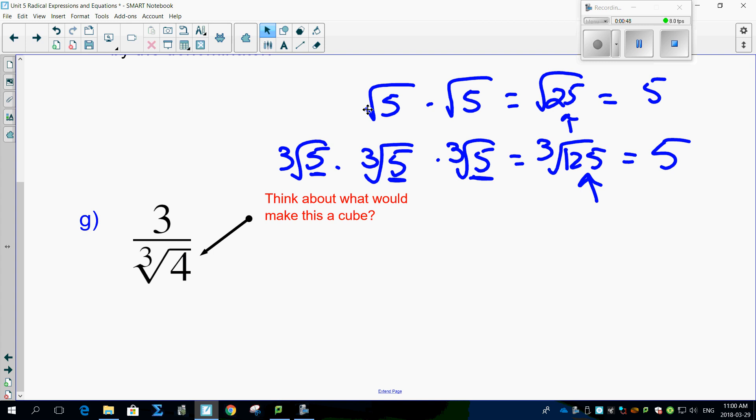So look what we have in terms of a pattern. For square roots, you multiply, make sure that there's two of them. For cube roots, you multiply, make sure that there's three of them. What if it was fourth root? You'd multiply and make sure that there's four of them, and so on and so on.